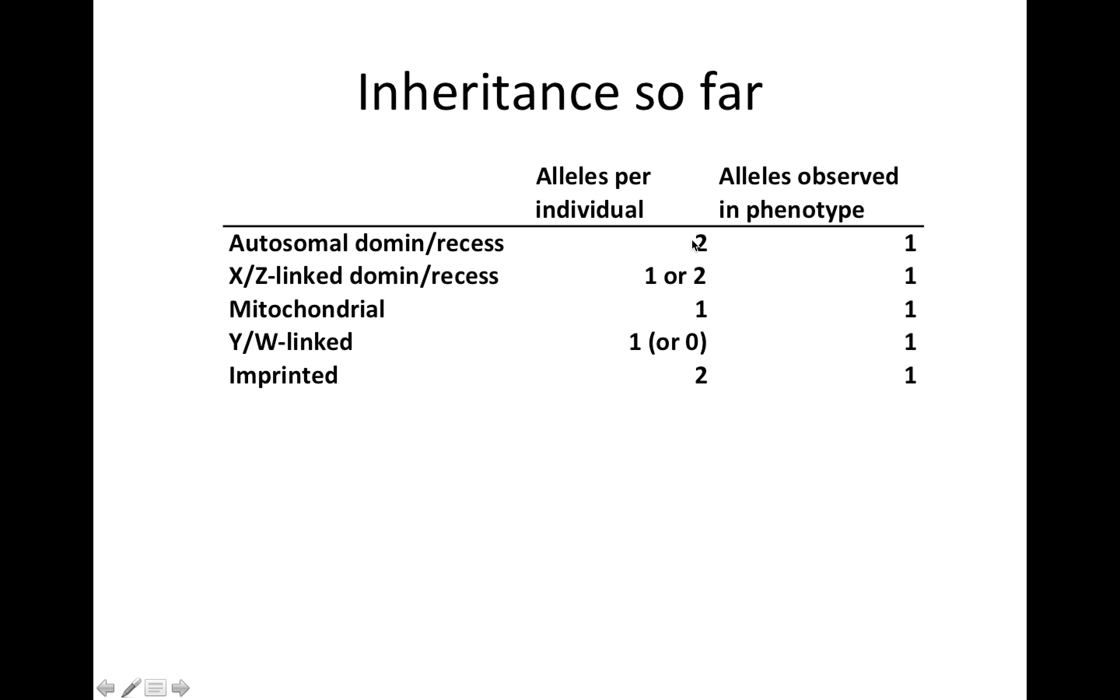These varied in terms of how many alleles we have. For an autosomal gene, a given individual has two alleles, whereas for an X linked gene, males have one and females have two. In the imprinted case, we have two but we only express one, and so forth. They varied in the number of alleles per individual, but in each case, we ended up only observing the presence of one of those alleles in the phenotype.